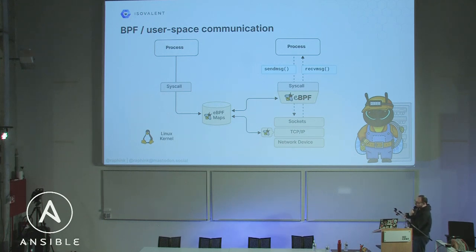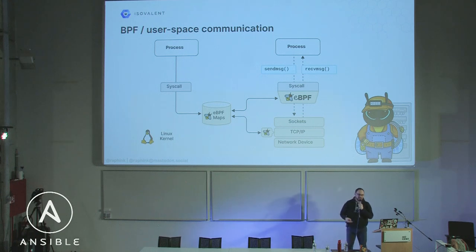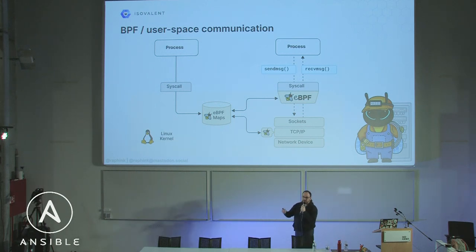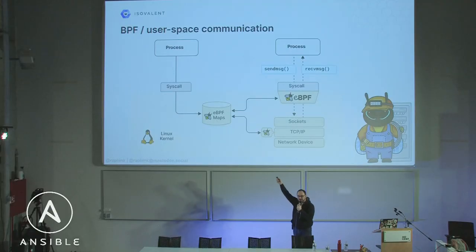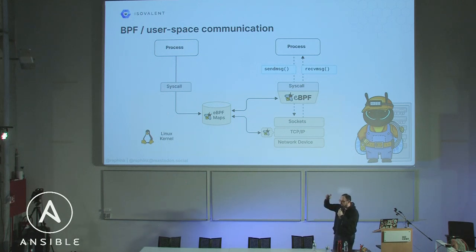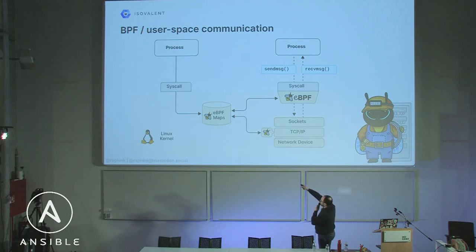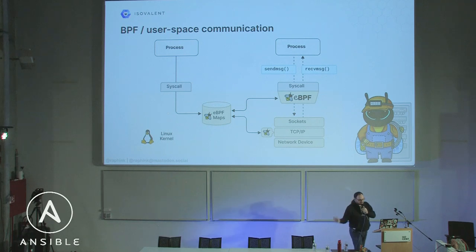I can inject programs in the kernel, but I need to retrieve information or configure these programs from user space, because not the whole logic is in the kernel. This works using structures called eBPF maps. eBPF maps are part of the kernel and accessible from within eBPF programs and from user space. They can be used to configure the way programs run in the kernel, or to extract data from the kernel to user space. For example, in observability, an eBPF program can write data to eBPF maps that user space programs read to turn into Prometheus metrics, JSON flows, etc. You can also configure programs by putting data from user space into eBPF maps — this is what Cilium does to configure network policy enforcement.